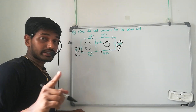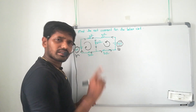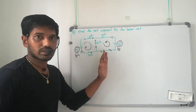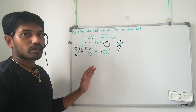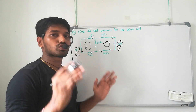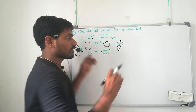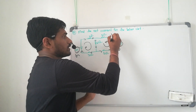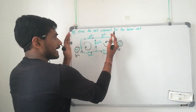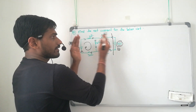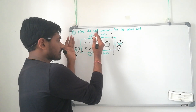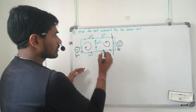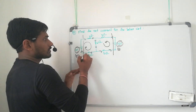Finally I will tell you a shortcut method — within 30 seconds you will get the answer. We will follow the common procedure. Here two sources are there, so we will apply the superposition principle. In the superposition principle, short one source, calculate the equivalent resistance and current in the circuit, then short circuit the other source.